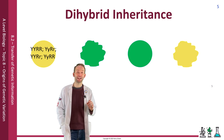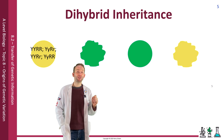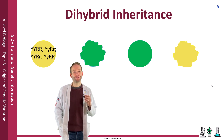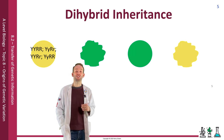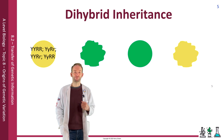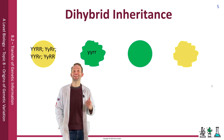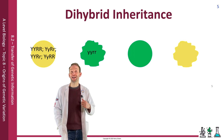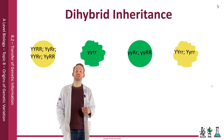We always show them in pairs: YYRR, YyRr, YYRr, and YyRR. Those are the genotypes for round yellow. For wrinkled green, which is recessive for both traits, the only genotype it could be is yyrr, and here are the others for the remaining phenotypes.